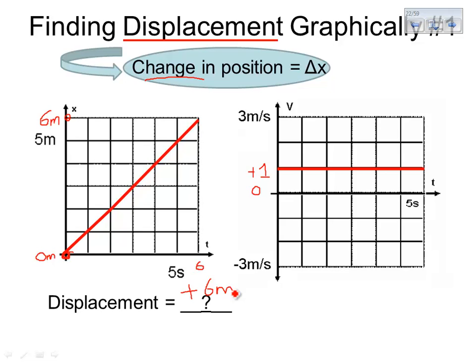If the velocity graph really tells us the same story, we should also be able to look at the velocity graph and find the displacement — somehow get six meters from it. Most students look at that and say: I know it's moving with a velocity of one meter per second, so every second it moves forward one meter, and it's moving for six seconds, so it must have gone forward a total of six meters.